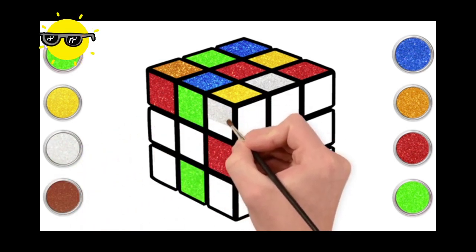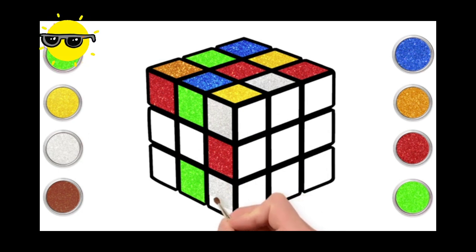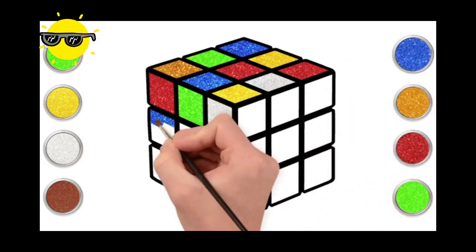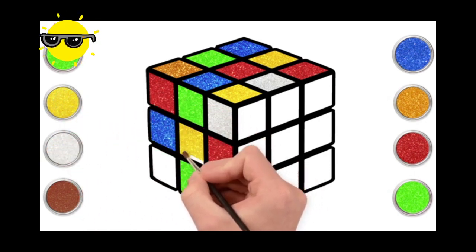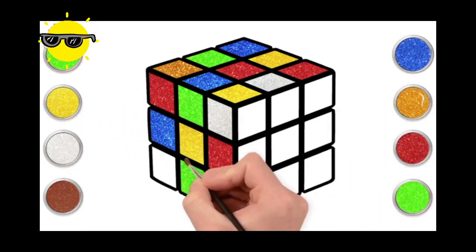However you want your Rubik's Cube to look because it depends whether or not you've managed to get the same colour on to one side. This one has not been played with yet so it's all mixed up.